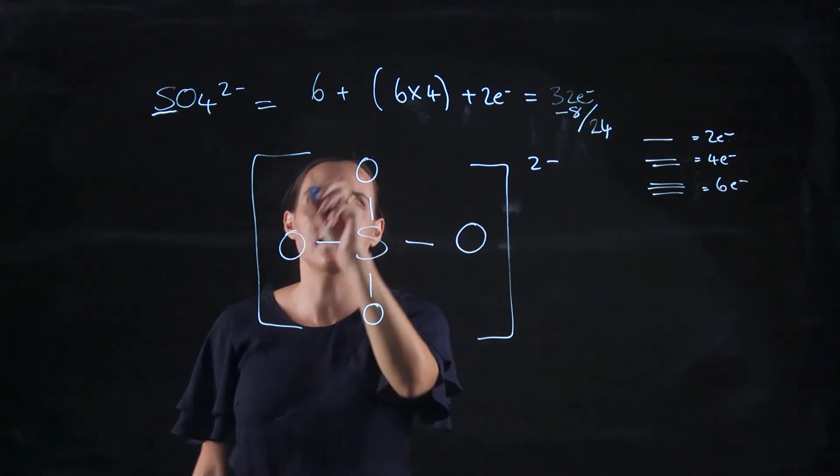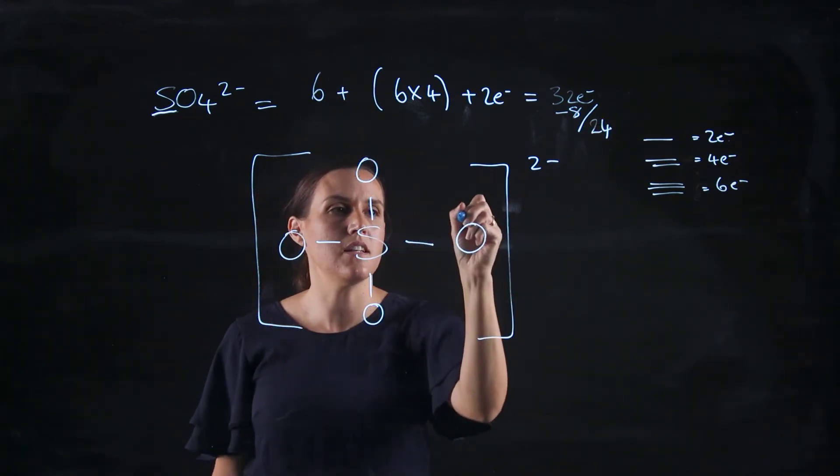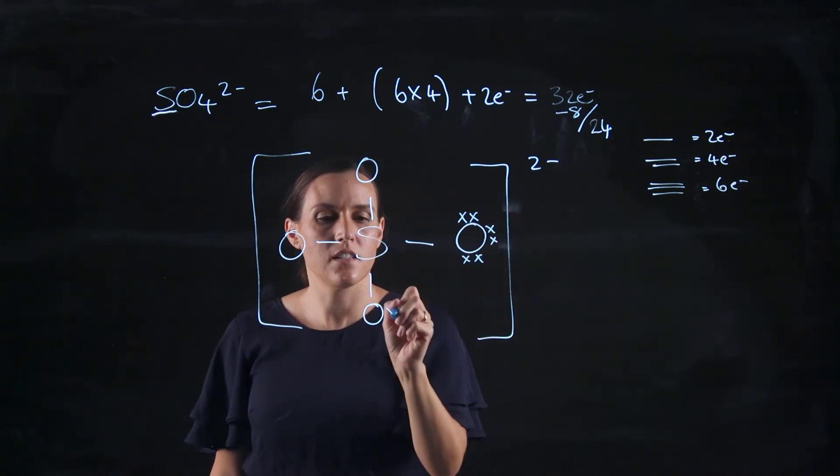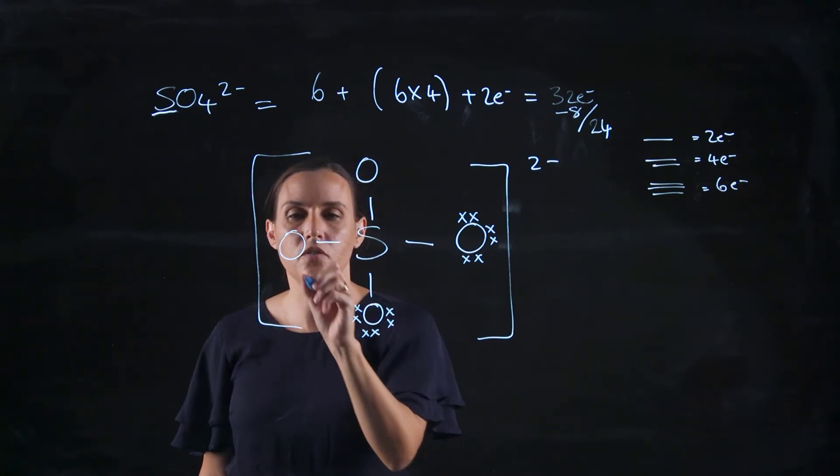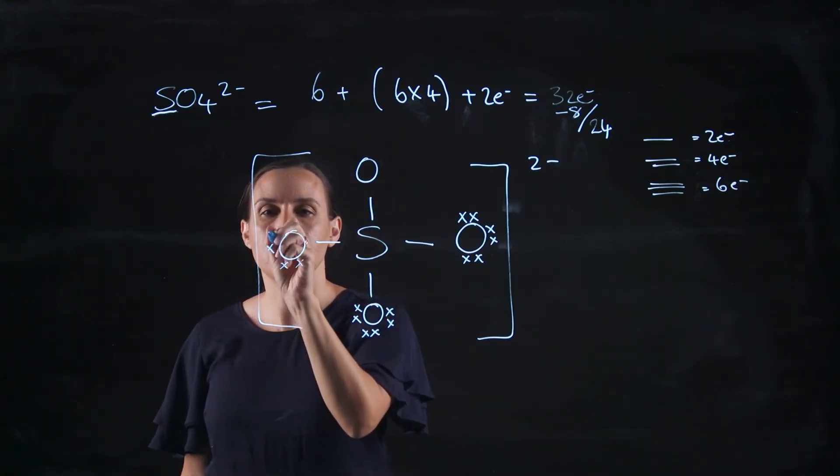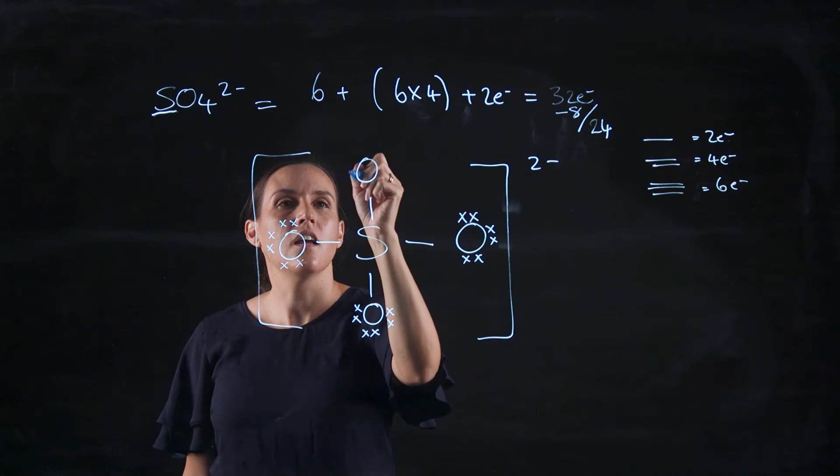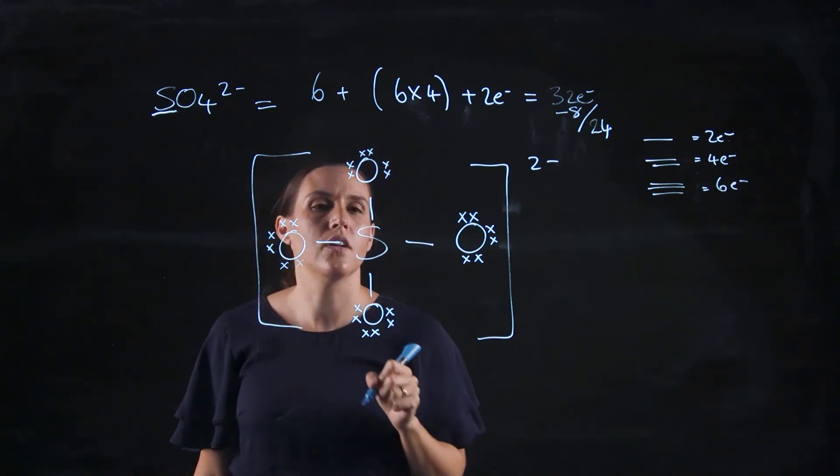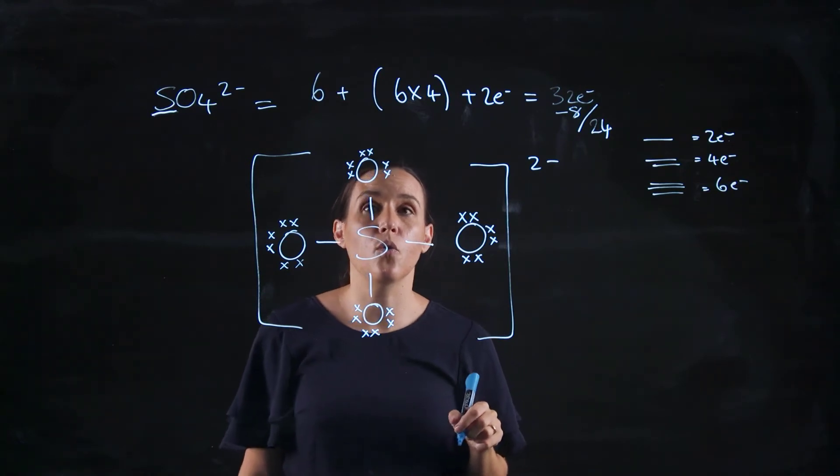So starting from my outside atoms and working my way to the centre, counting from 1 through 24. So that gives me 24 electrons.